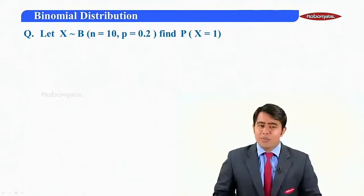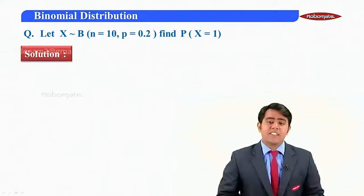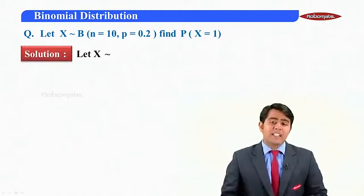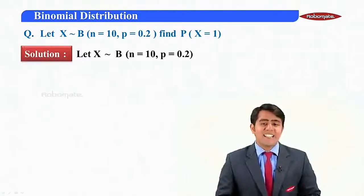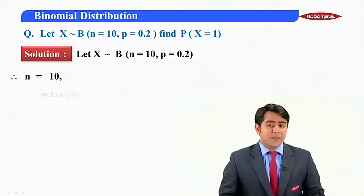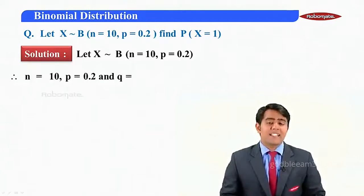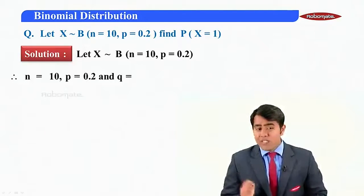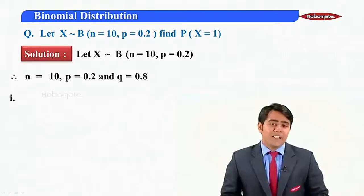This is quite a simple problem. Here, the data is given in symbolic form. So let us start with the solution. Let X follow binomial distribution for 10 trials with probability of success as 0.2. Now, I know that here n is nothing but 10. Here P is given to us as 0.2 and I can say that Q will be equal to 1 minus P, that is equal to 0.8.